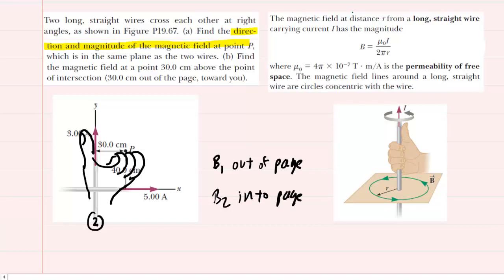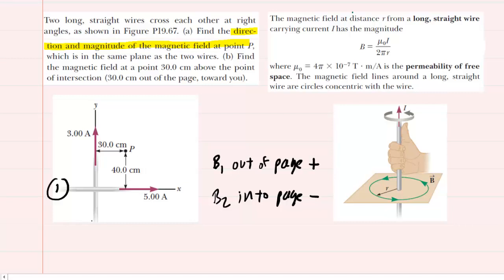Typically, out of the page is considered a positive direction and into the page is considered negative. Therefore B1 will be positive and B2 will be negative. Now that we've figured out the directions, we need to figure out the magnitude. The magnetic field of each wire will be equal to a constant multiplied by the current within the wire divided by 2π times the distance to the point.